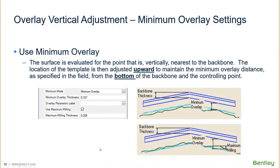The next setting to look at is the use minimum overlay. This is when the surface is evaluated for the point that is vertically nearest to the backbone. The location of the template is then adjusted upwards to maintain that minimum overlay distance. So you're going along your existing ground, you put in a minimum overlay value, and it makes an adjustment to the backbone bottom near the controlling point.